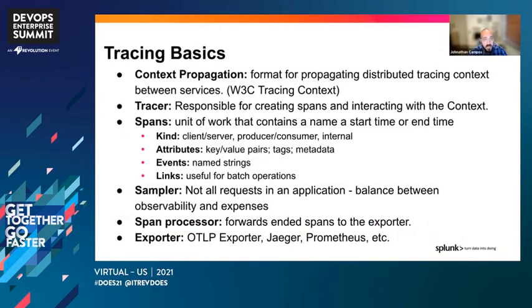When it comes to tracing, we first think about the context we'll use. Typically, W3C tracing context is what's used — this is the format for propagating distributed tracing context between given services. The tracer is responsible for creating spans and interacting with the context. Spans are the unit of work that contain a name, a given action, a start time and an end time. They typically contain the kind — either client, server, producer, or consumer — and any attributes like the version number or metadata we want to include, the given event, and any helpful links to batch operations. We're going to see that when we look at a configuration example in a minute.